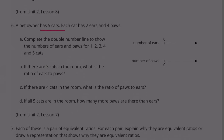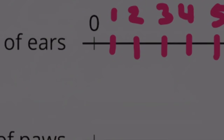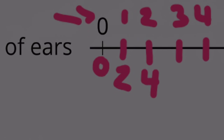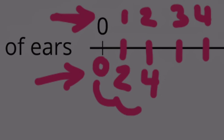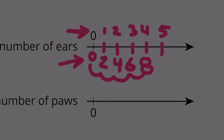Number 6: A pet owner has 5 cats. Each cat has 2 ears and 4 paws. Part A: Complete the double number line for 1, 2, 3, 4, and 5 cats. The number of ears on 0 cats is 0; 1 cat is 2; 2 cats is 4. Up top we increase by 1 cat, and for ears we increase by 2 each time: 0, 2, 4, 6, 8, 10 ears for 5 cats.